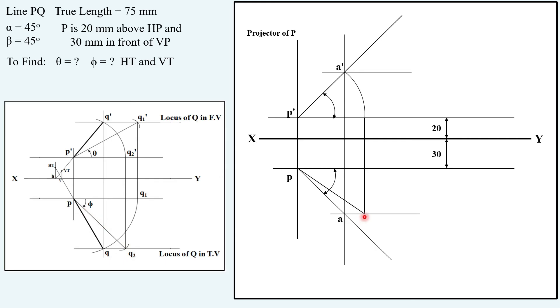But we have the true length given to us, so now just extend this true length here and draw an arc. This is the point where the actual true length ends. Name this point as Q2. Drawing a locus here, locus of Q in top view, and this point is Q. So this is the actual top view, P to Q.